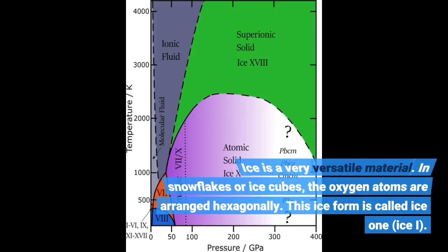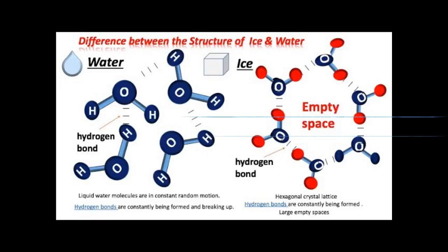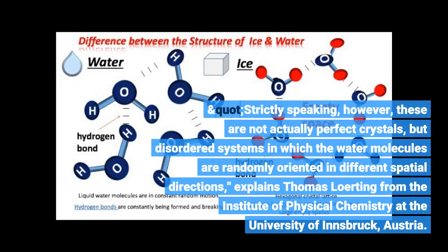Ice is a very versatile material. In snowflakes or ice cubes, the oxygen atoms are arranged hexagonally. This ice form is called ice 1. Strictly speaking, however, these are not actually perfect crystals, but disordered systems in which the water molecules are randomly oriented in different spatial directions, explains Thomas Lording from the Institute of Physical Chemistry at the University of Innsbruck, Austria.